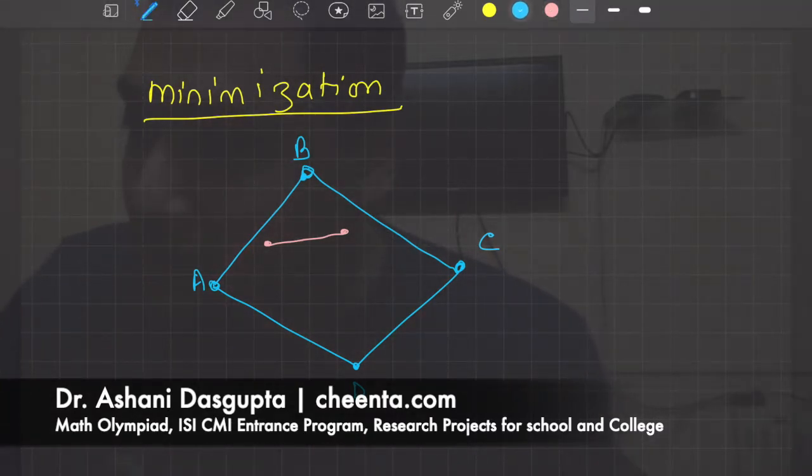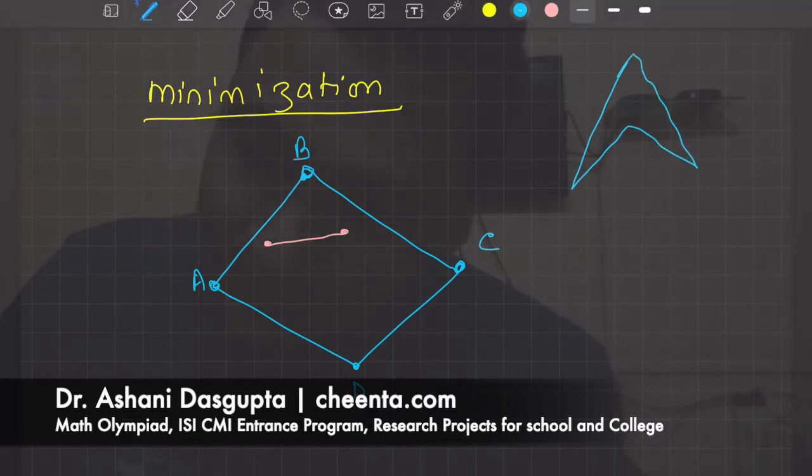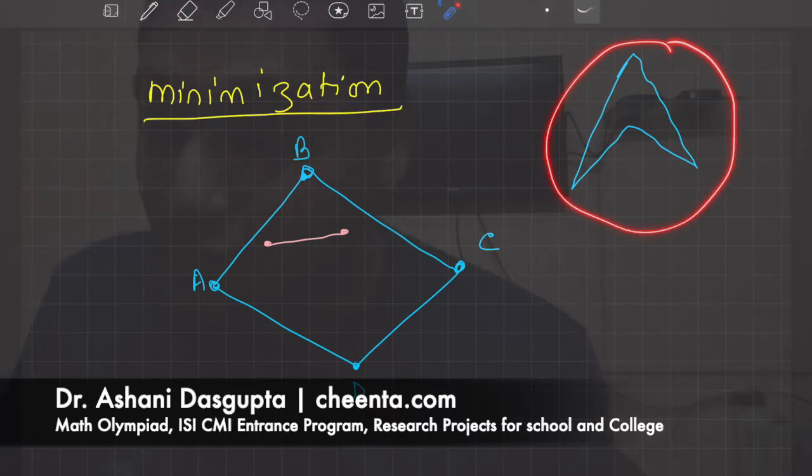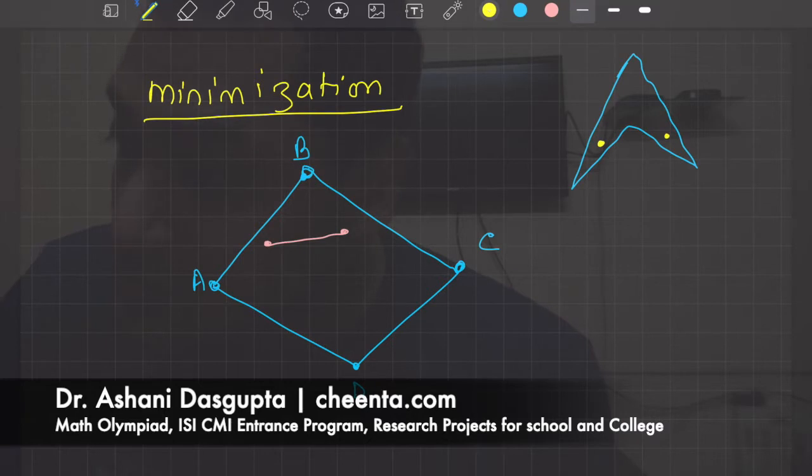Here is an example of a non-convex quadrilateral. Why is this particular quadrilateral non-convex? Well, you can easily find two points such that the line segment joining them is outside, at least partly outside the quadrilateral. So this is not convex.